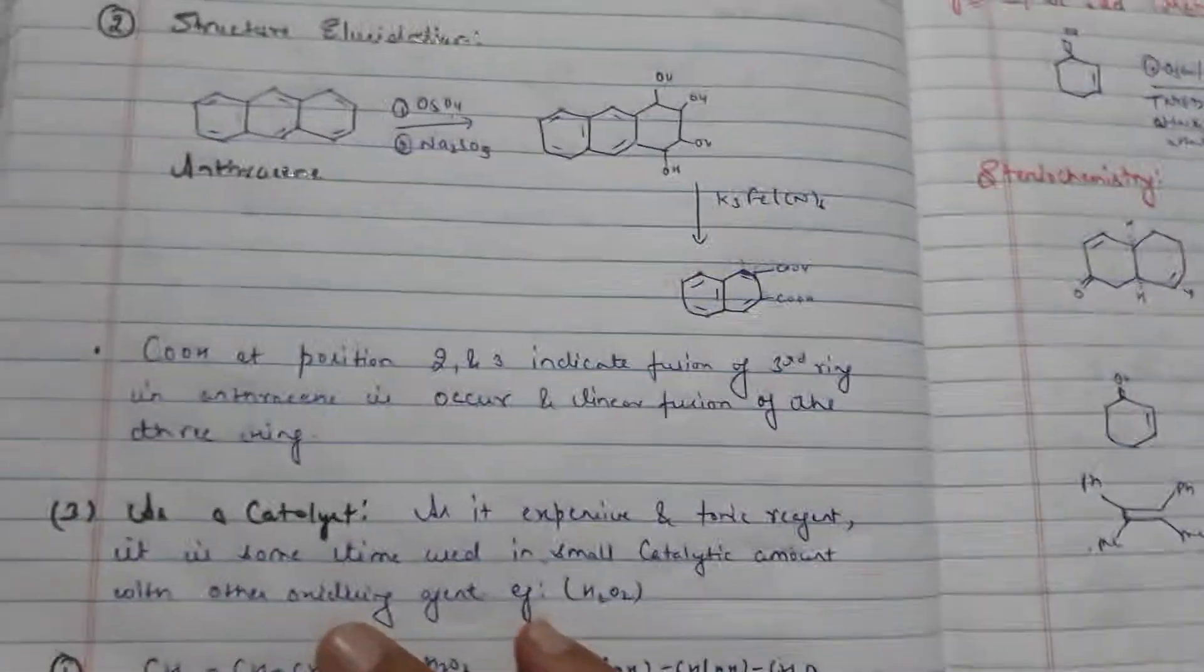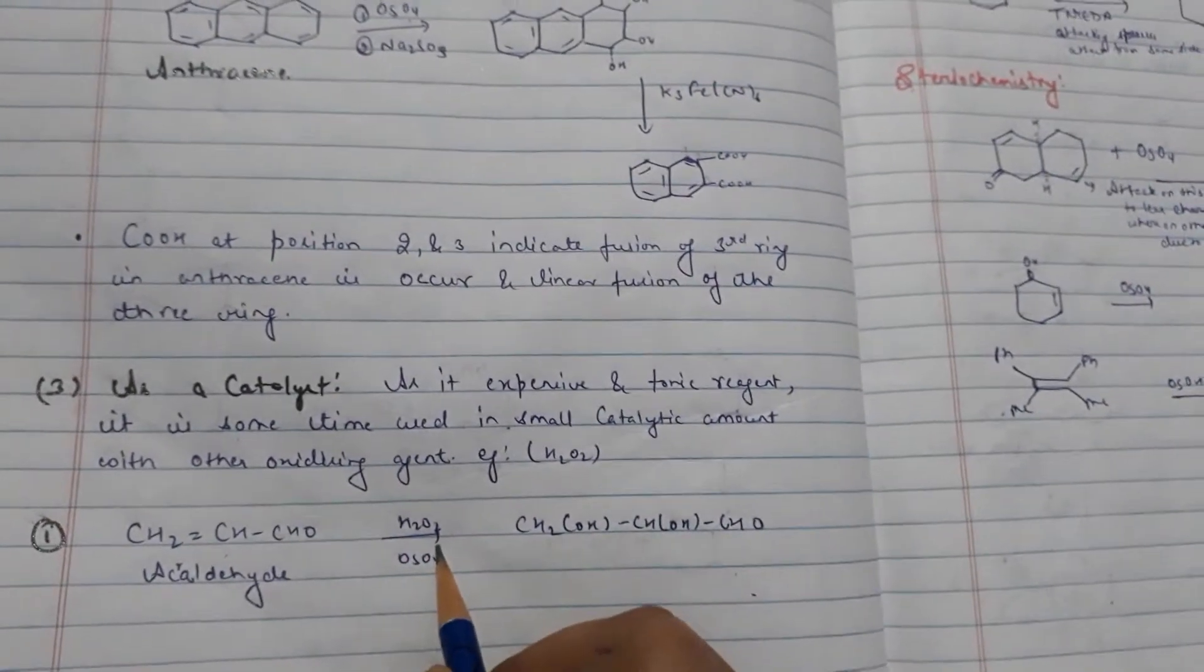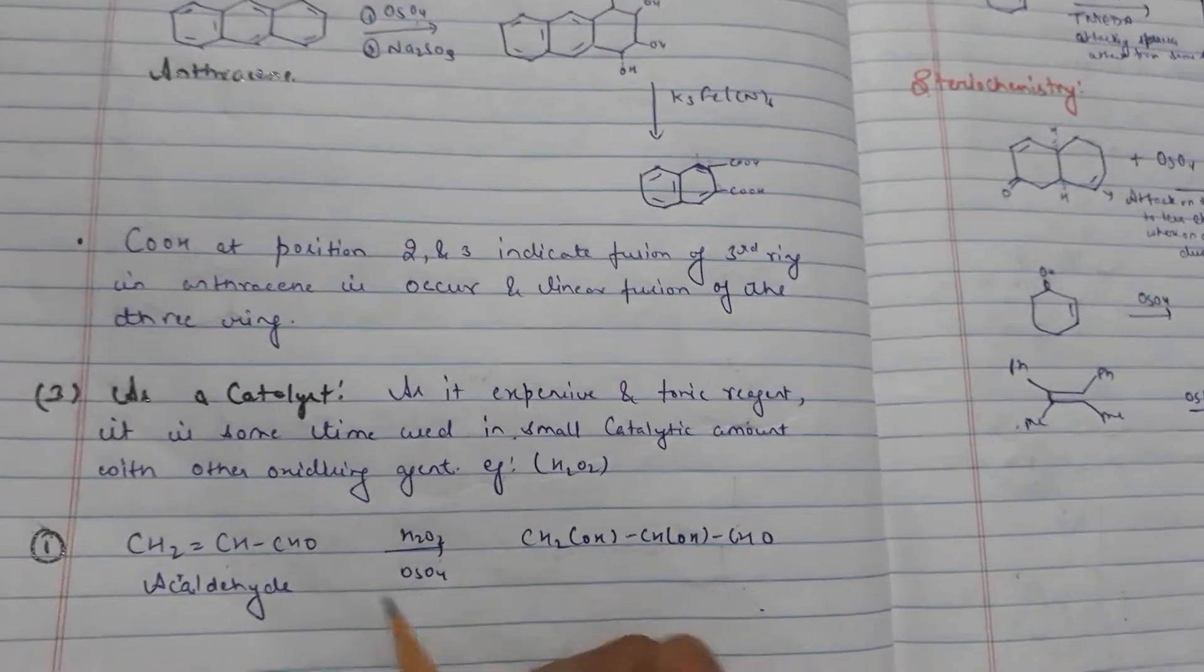Used as a catalyst. This is acrolein and presence of H2O2 and Osmium tetraoxide as a catalyst.